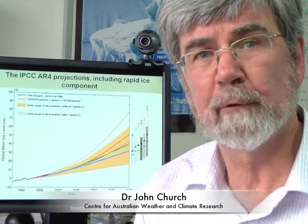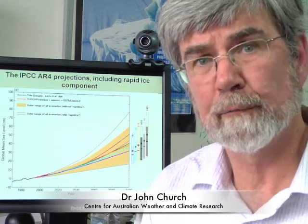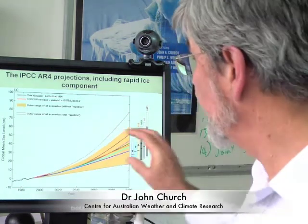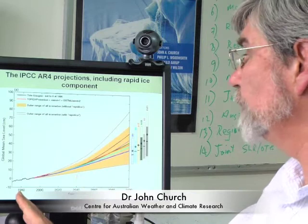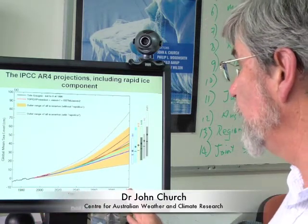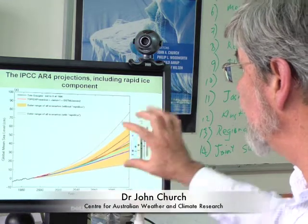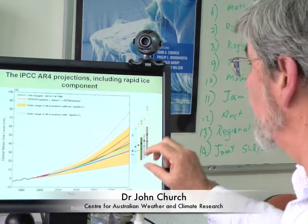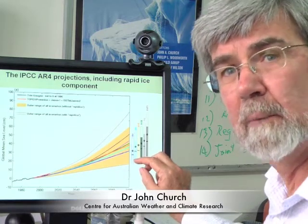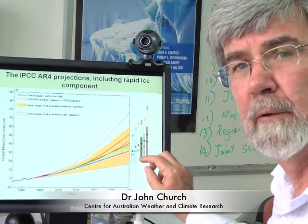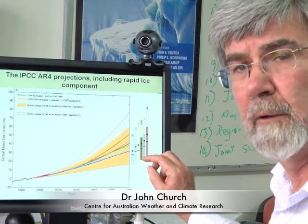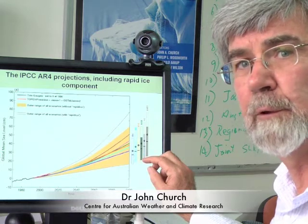The projections for sea level rise are generally done from 1990 to the present, and they're shown on this graph here. Here's a graph going from 1980 on the left through to 2100 on the right, and the projections are shown by this band. The projections at the lower end, which are about 20 centimetres by 2100, are associated with smaller release of greenhouse gases into the atmosphere.